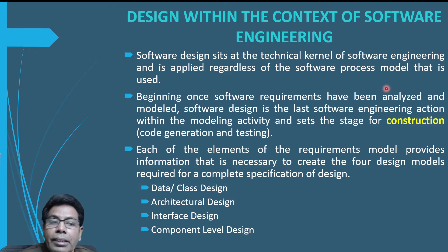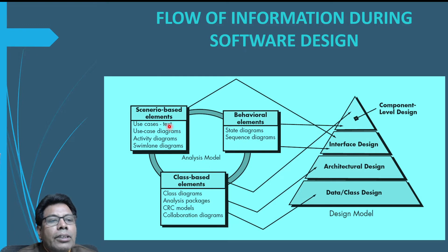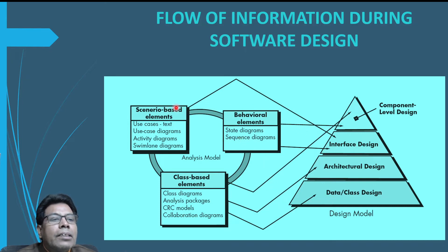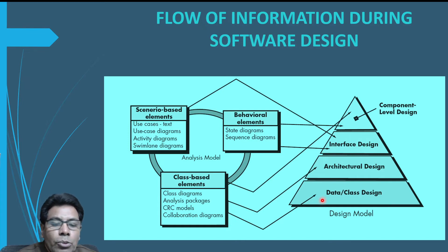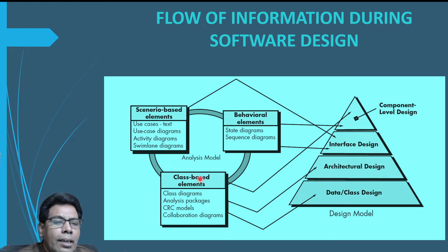Let us see the flow of information during software design. We have the analysis model or requirement model — scenario-based, class-based and behavioral-based. These different elements are fed to the design model. Design, using design notation and design methods, produces data and class design, architectural design, interface design, and component level design. The flow of information goes from the analysis model to the design model, and as per the requirement, the design model will produce the particular design.